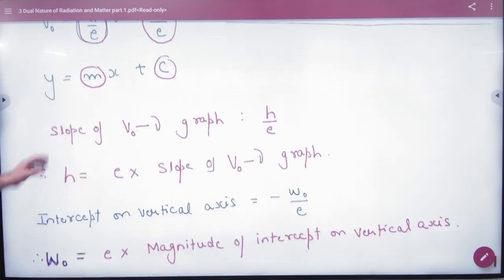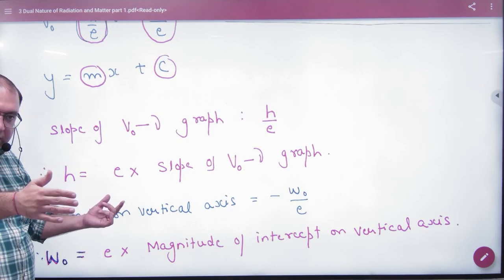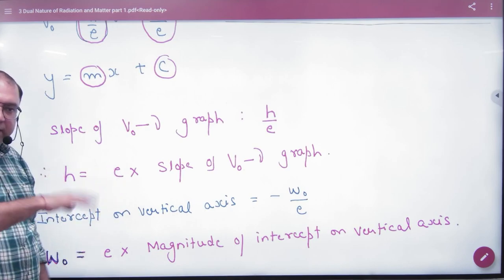If you have a straight line, then to find Planck's constant you have to multiply the slope by e, then Planck's constant will come.